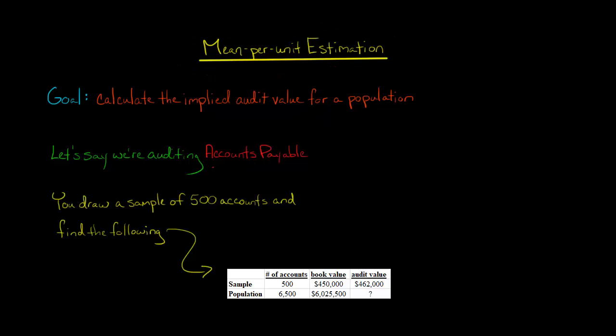So let's say that we're auditing accounts payable. We've got the following data here. We've got a population of 6,500 accounts payable, and they have a book value of $6,025,500.